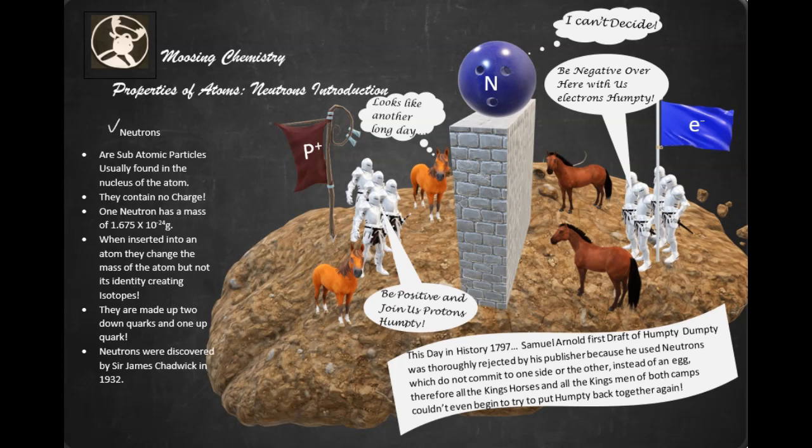So what are neutrons? Well, first of all, neutrons are subatomic particles usually found in the nucleus of the atom. Neutrons contain no charge. So unlike protons, which are positively charged, and electrons, which are negatively charged, neutrons themselves are electrically neutral and have no charge.